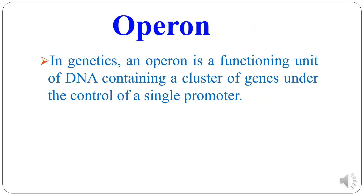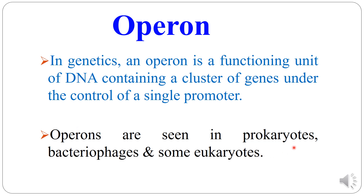Now we come to operon. In genetics, an operon is a functioning unit of DNA containing a cluster of genes under the control of a single promoter. Remember that a promoter is a region to which RNA polymerase binds — P for promoter and P for polymerase. Operons are seen in prokaryotes, bacteriophages, and some eukaryotes also.